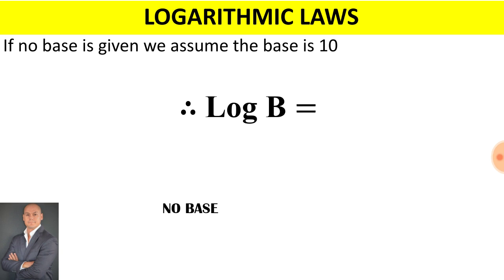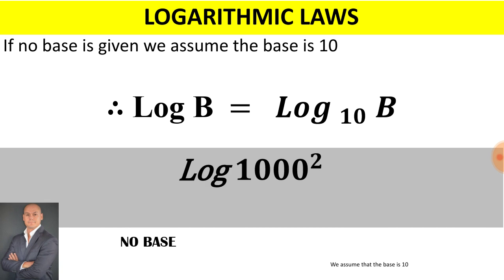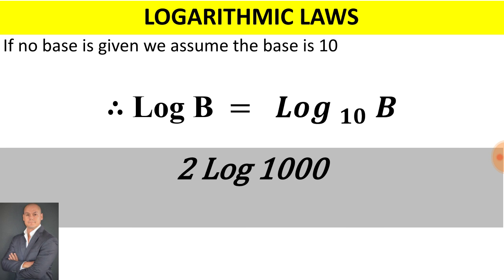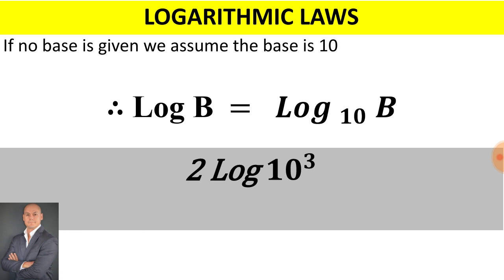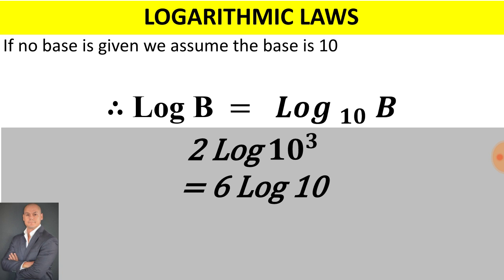If no base is given, we assume that the base is 10. Therefore, log of b can be rewritten as log base 10 of b. In this next example, there is no base given, so we take the exponent to the front: 2 multiplied by log of 1000. The 1000 simplifies to 10 to the exponent of 3, so we take that exponent to the front: 2 multiplied by 3 gives us 6 multiplied by log of 10, which is log base 10 of 10, simplified to 1. Therefore, the final answer is 6.